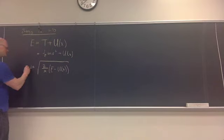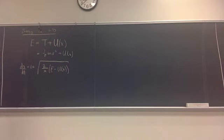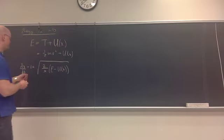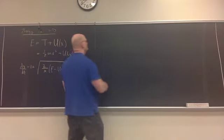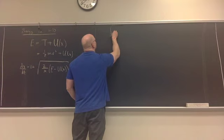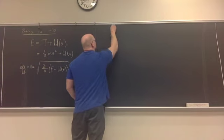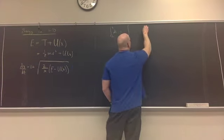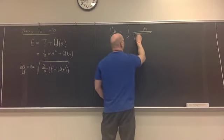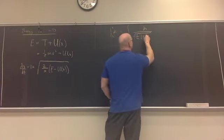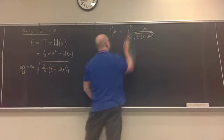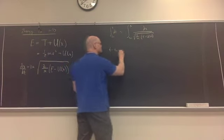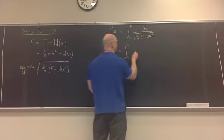What I mean by integrate is: we know that the velocity, by definition, is the rate of change of position with respect to time. So if I separate variables, since this is position-dependent and this is time-dependent, we can say that the integral of dt from the initial time to the final time equals the integral of dx divided by the square root of 2/m times (E minus U(x)), from the initial to the final position. The left-hand side is simply t minus 0.